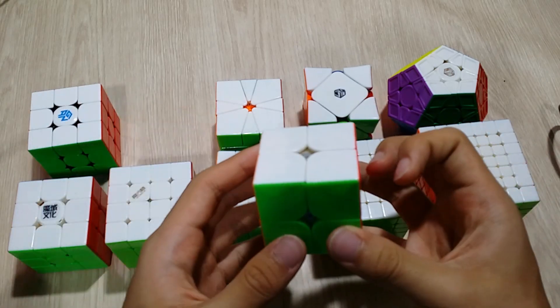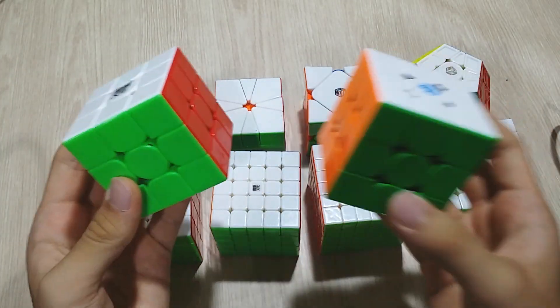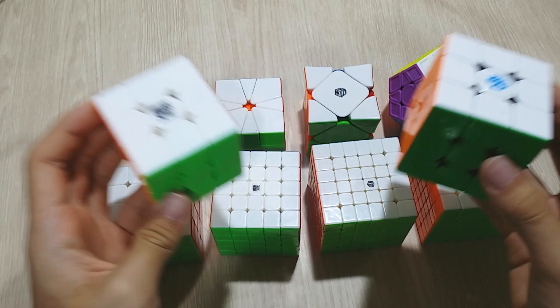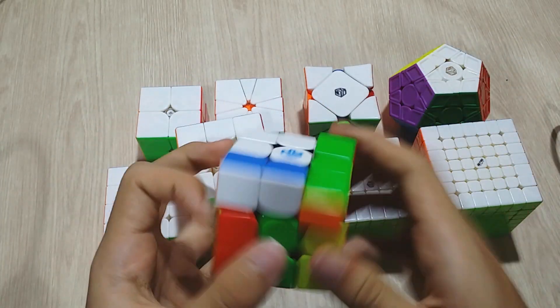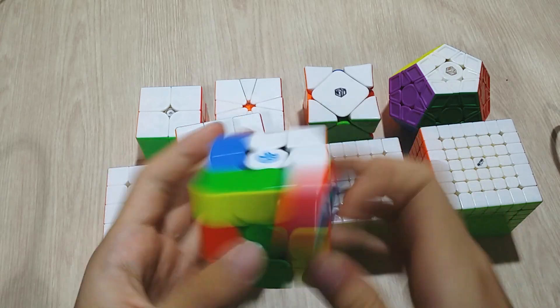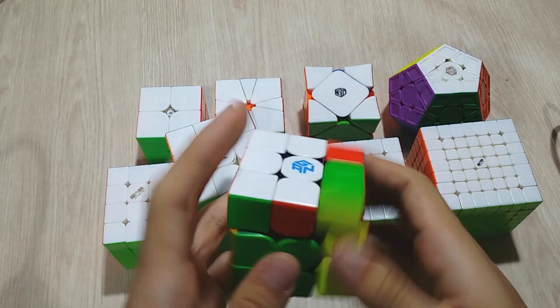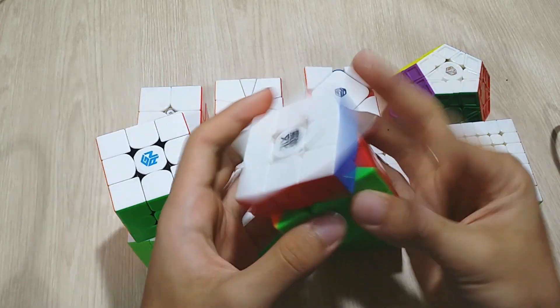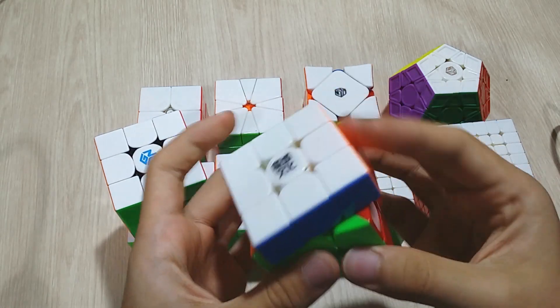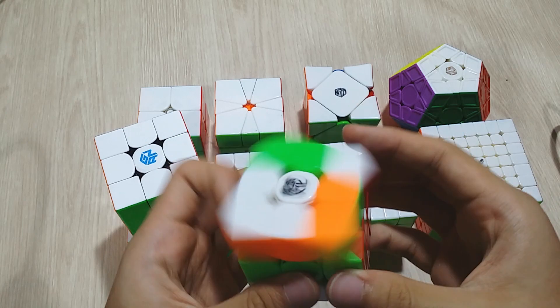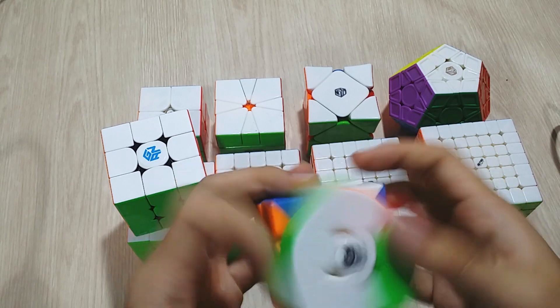For 3x3, I have two cubes. I cannot decide which one is better, but I'm leaning towards the GAN 356X. The feeling is just smoother, buttery and smooth and fast. Does not lock at all. And the WRM is also very smooth and fast, though it's been locking on me a lot. But the better thing about this compared to the GAN 356X is it's smaller, and I like smaller cubes more.